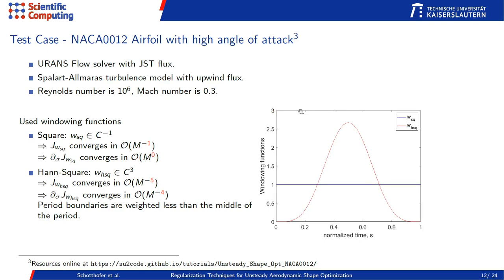We look at the NACA airfoil test case using the URANS flow solver with a JST flux and Spalart-Allmaras turbulence model at chosen Reynolds and Mach numbers to get an unsteady flow. We compare two approaches: the traditional square window — the characteristic function, marked in blue — which gives order-one convergence for the average and no convergence for the sensitivity, and a high-order window, the Hann-square window, which is three times differentiable, yielding expected convergence orders of five and four respectively.